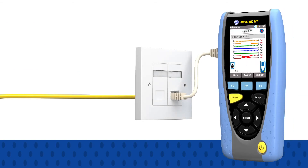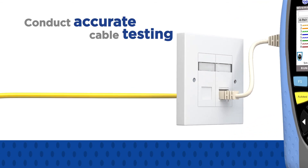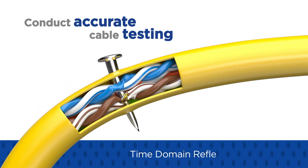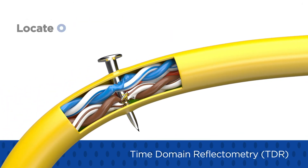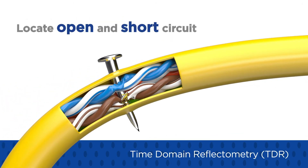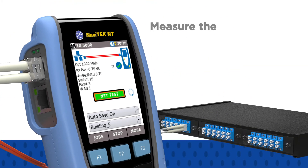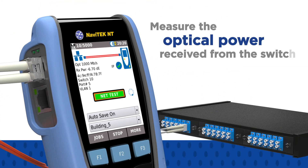Navitech NT can also be used to conduct accurate cable testing. For copper cabling, time domain reflectometry, or TDR, is used to locate common wiring faults such as open and short circuits. For fiber optic cabling, Navitech NT shows the optical power received from the switch.